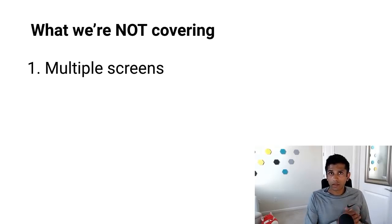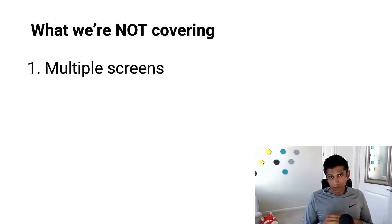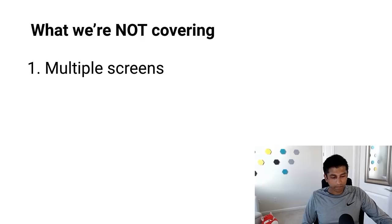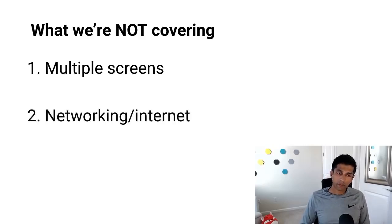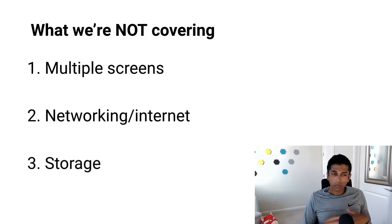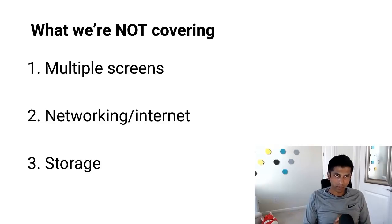There's also a lot we're not going to cover in the tip calculator, which is important to reduce scope and make this app quick and simple to build if you're new to Android. First, we're not going to have multiple screens, so we don't need to deal with navigation or the back stack. The single screen is quite simple because we don't have any list data. Second, we have nothing to do with networking and the internet. Third, we're also not dealing with storage — everything will be local and in memory, so we're not writing to a database or to the cloud.